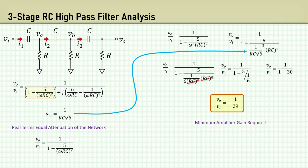Therefore, the minimum amplifier gain required to make the loop gain equal to 1 is minus 29. That would be 29.25 dB.